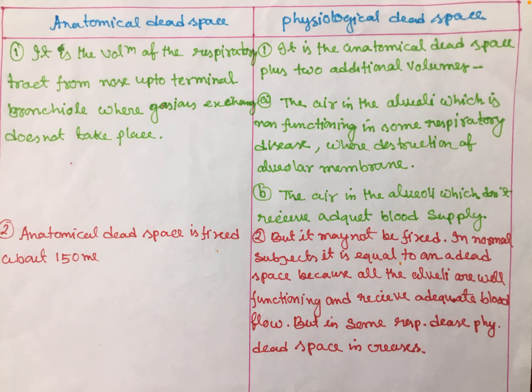We are discussing anatomical dead space and physiological dead space. Anatomical dead space is the volume of the respiratory tract from the nose up to the terminal bronchioles where gaseous exchange does not take place.